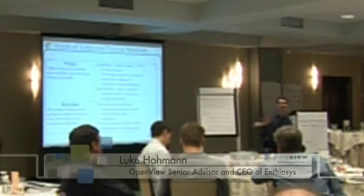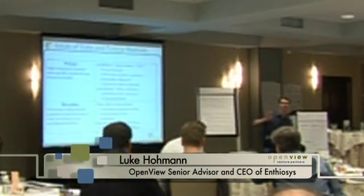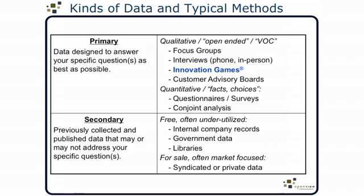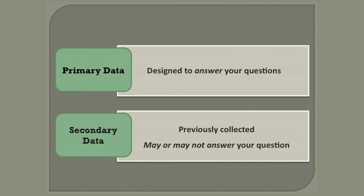This is the barest knowledge of market research to help you make choices. There's primary data and secondary data — it doesn't mean one is more important than the other. It just means that the data was collected for different reasons. Secondary data was previously collected data that may or may not address your question. Primary data is data that is specifically designed to answer your question.